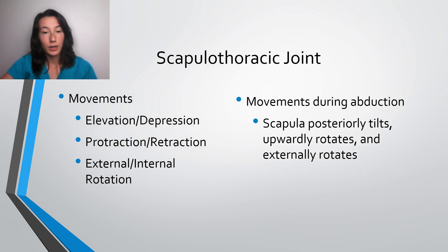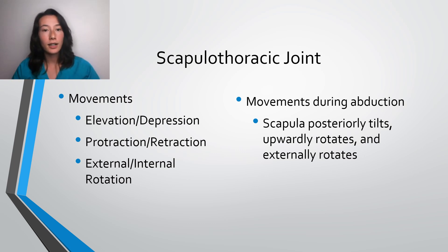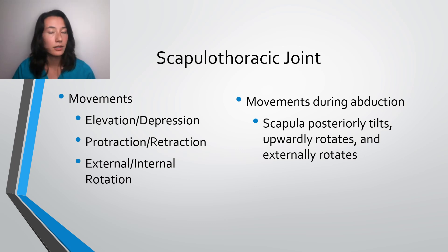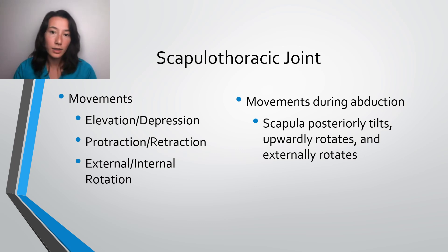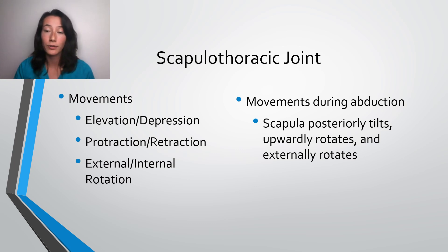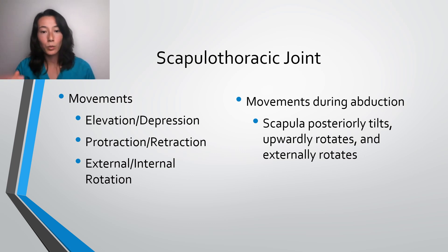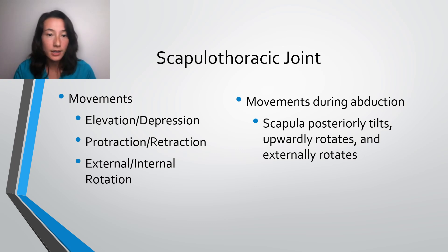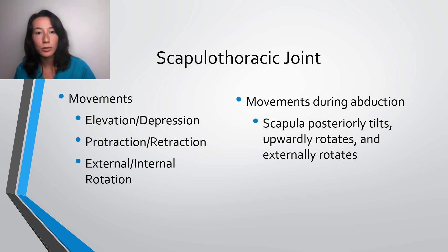Now, the scapulothoracic joint. Before we start talking about movements, understand that this is not considered a true joint, because it does not contain the normal components of what we understand joints to have, including ligaments, joint capsules, etc. However, the mobility of this joint — or non-joint — is very crucial in providing optimal shoulder elevation biomechanics. Movements it can perform include elevation, depression, protraction, retraction, external rotation, and internal rotation.